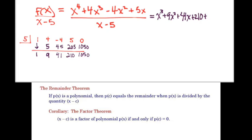So I can rewrite this as these are my coefficients, x cubed, 9x squared, 41x, and then 210, and then remainder 1050. And the remainder is always written over the divisor, and so we have x minus 5 on the bottom there.